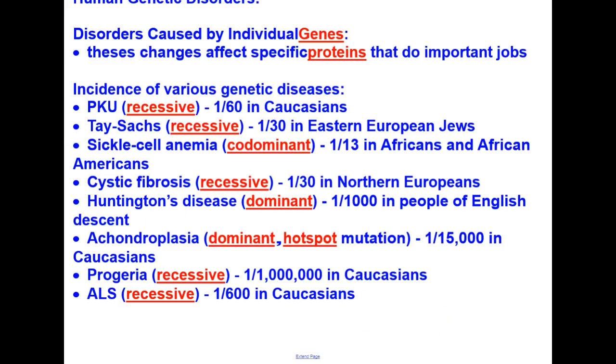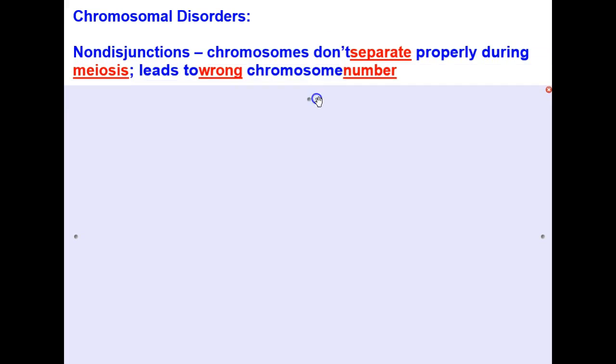Now let's switch and talk about chromosomal disorders. Chromosomal disorders usually take place due to nondisjunctions, and that's what happens when chromosomes don't separate properly during meiosis. This would be during anaphase 1 and/or anaphase 2, typically only during anaphase 1, and this leads to the wrong chromosome number.